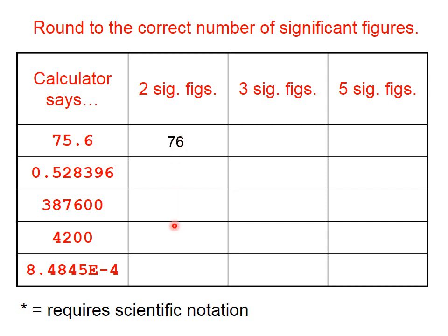If we continue down this column, we would write 0.53, 390,000. This one already has two significant figures, 4,200, and this one to two significant figures would be 8.5 times 10 to the negative fourth.